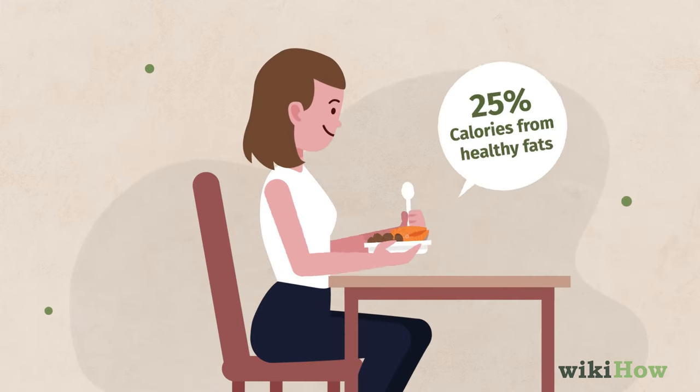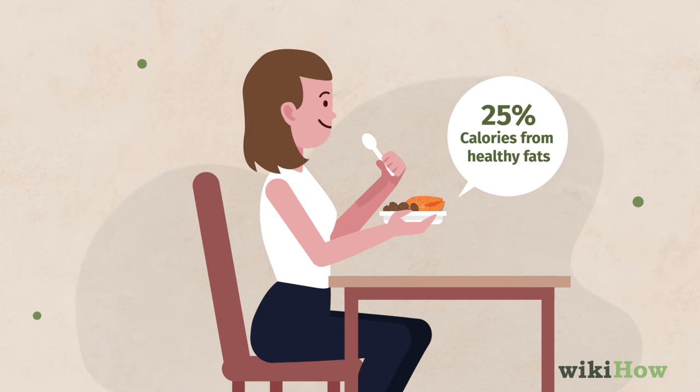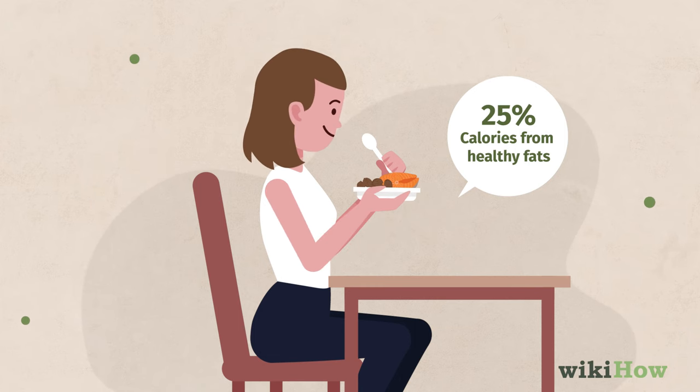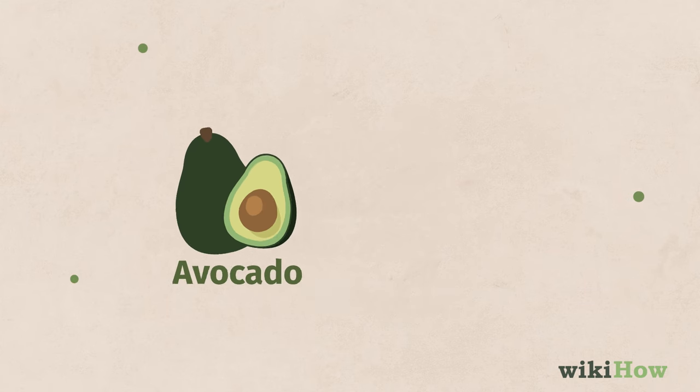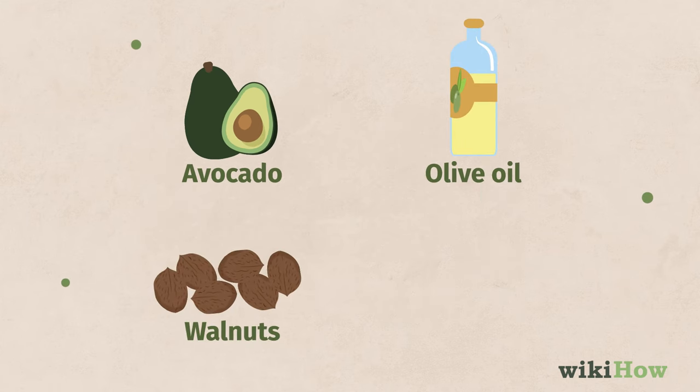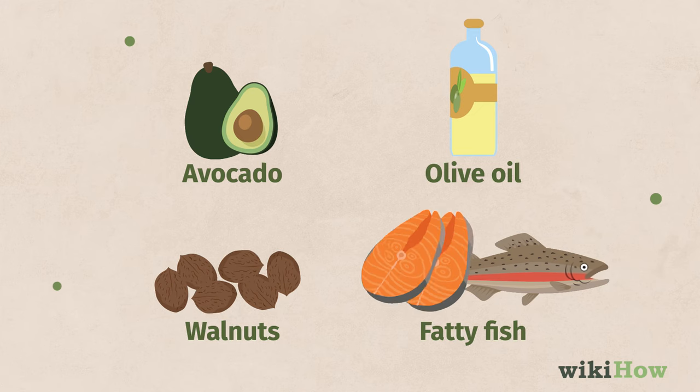Finally, get 25% of your calories from healthy fats, which your body needs to rebuild your muscles. You can get healthy fats by eating avocado, olive oil, walnuts, and fatty fish like salmon and trout.